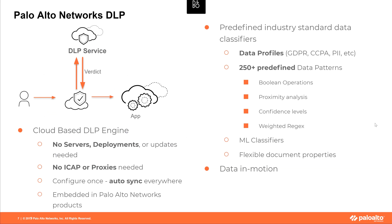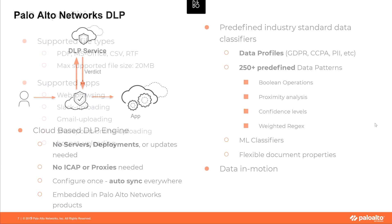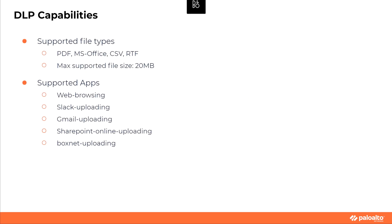The specific capabilities include no servers, no deployment, no ICAP, no proxies, and auto-sync everywhere. It covers data profiles for GDPR, CCPA, etc. DLP right now covers 250-plus predefined data patterns and has proximity features, so you can define proximity keywords to reduce false positives. There are Boolean operations, confidence levels you can define, and weighted regex. The supported files for Prisma Access DLP are PDF, MS Office, CSV, and RTF, with a maximum file size of 20 megabytes. Supported apps include any web browsing and specifically Slack uploading, Gmail, SharePoint, and Box.